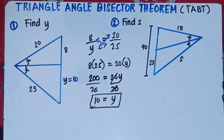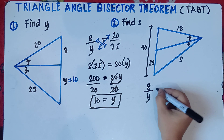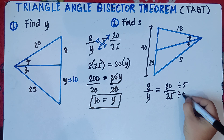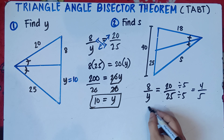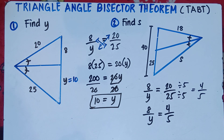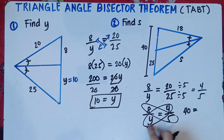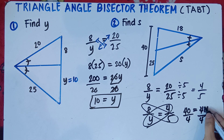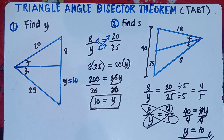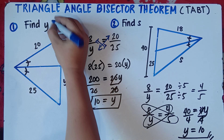It's better to reduce the fraction before doing the cross multiplication if you have large numbers. For example number 2, we're told to find S. We don't have one opposite side but we have the total of 40. Subtract 25 from 40 to get 15. So the sides are 15 and 25. The proportion is 15 over 25 equals 18 over S. Reduce 15 and 25 by 5: 3 over 5 equals 18 over S. Cross multiply: 3S equals 90. Divide by 3, and S equals 30.